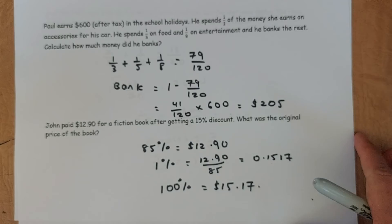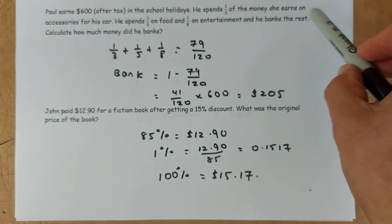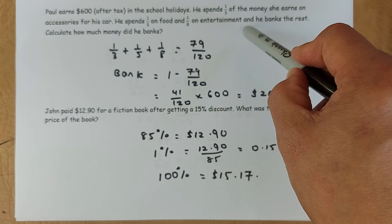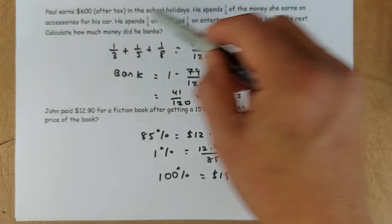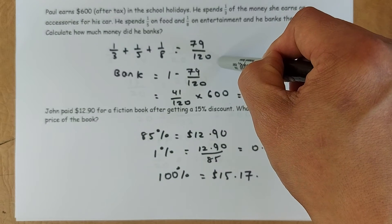Now we look at question 7. Paul earned $600 after stack in the school holiday. He spent one-third of the money he earns on accessories on the car. He spent one-fifth on food and one-eighth on entertainment. So you add all the fraction together. One-third plus one-fifth and one-eighth, they come up to 79 over 120.